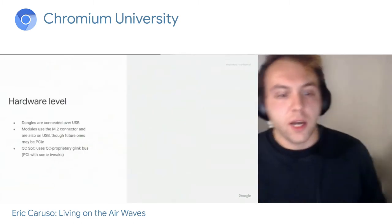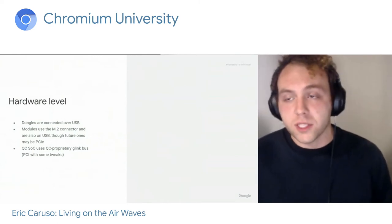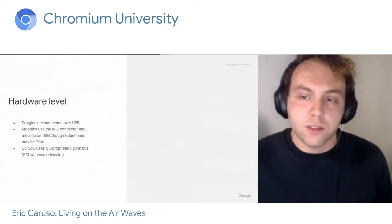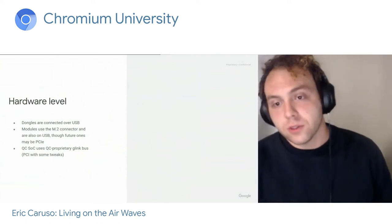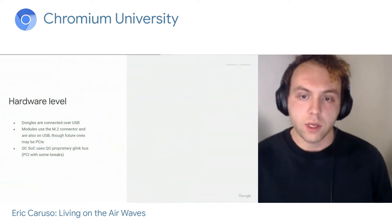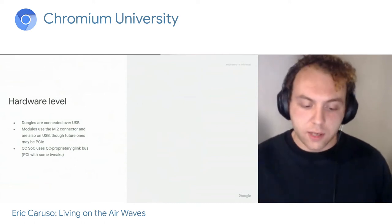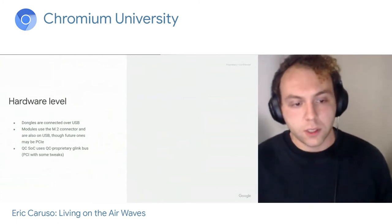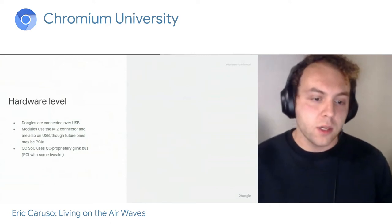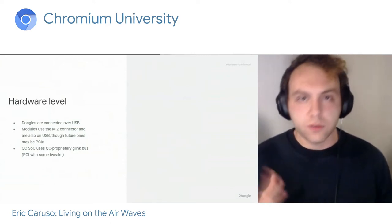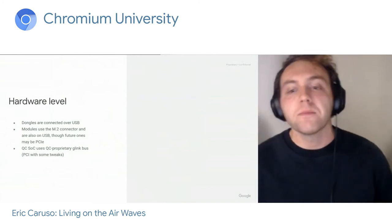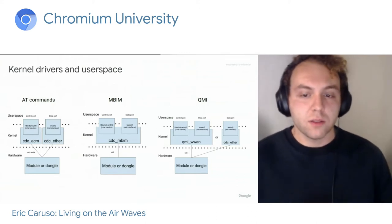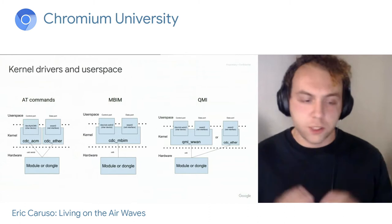At the hardware level, if you have a dongle, you just have a plastic box with a USB port and you plug those things together and get online. For modules, there's an M.2 connector on your board and the module slots into that, connected via USB or maybe PCIe — that's how it's exposed to the kernel. For Qualcomm system-on-a-chip, they have their own proprietary bus called G-Link, which is sort of like PCIe but with some differences.